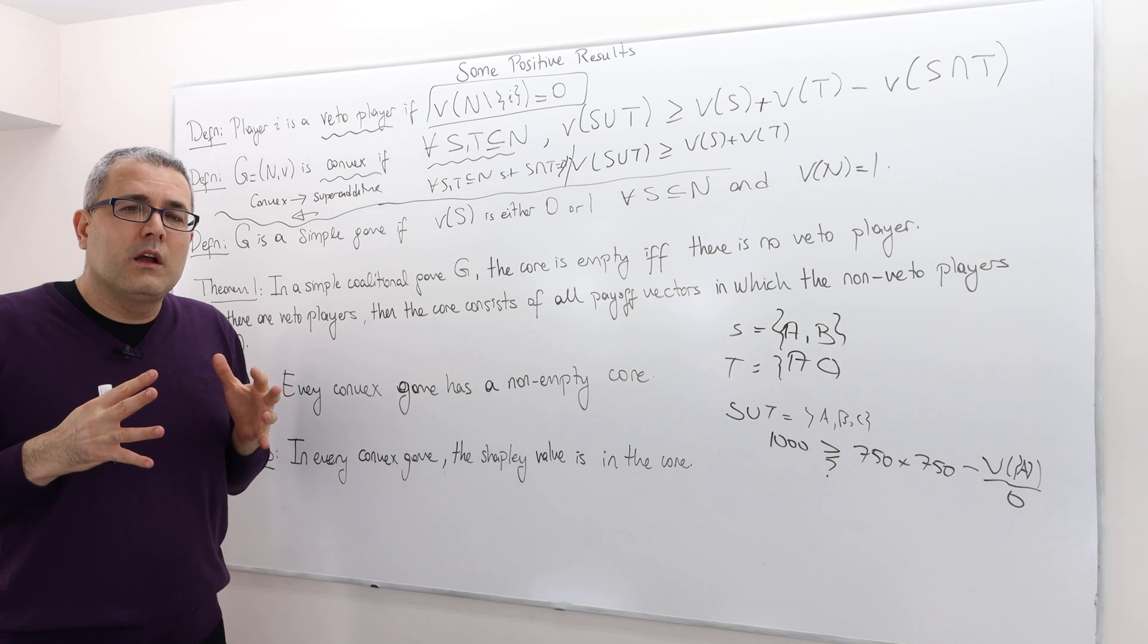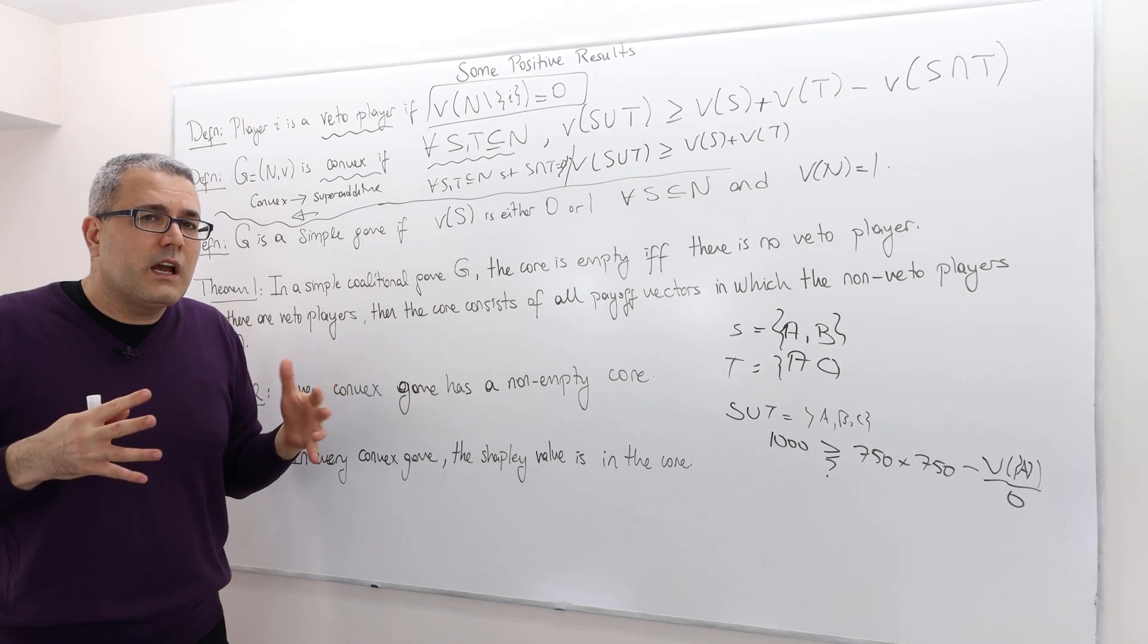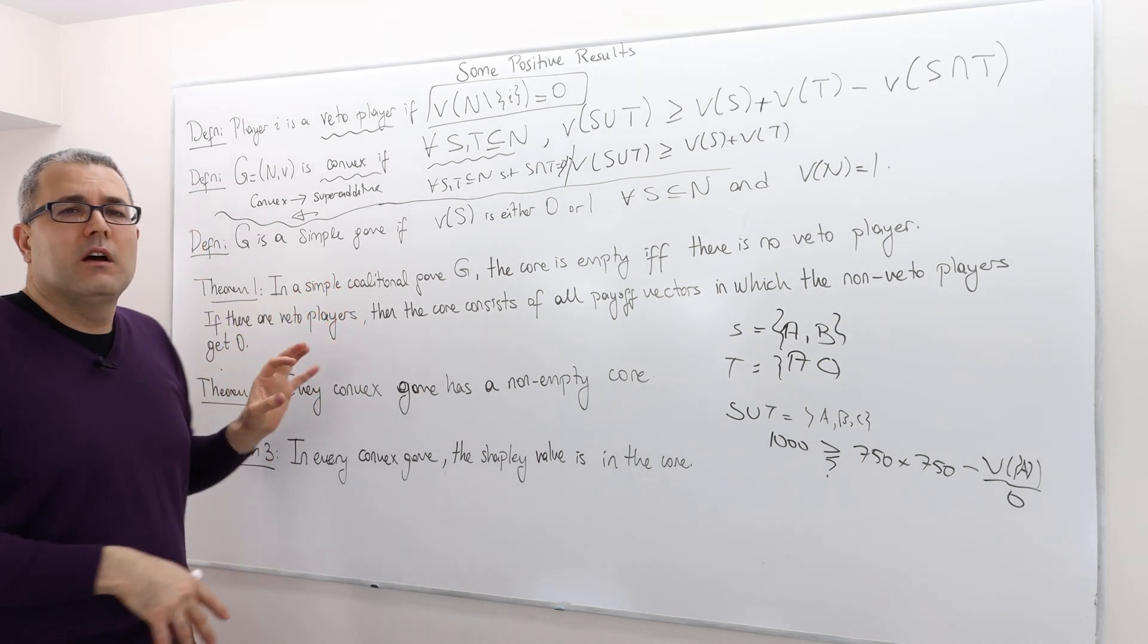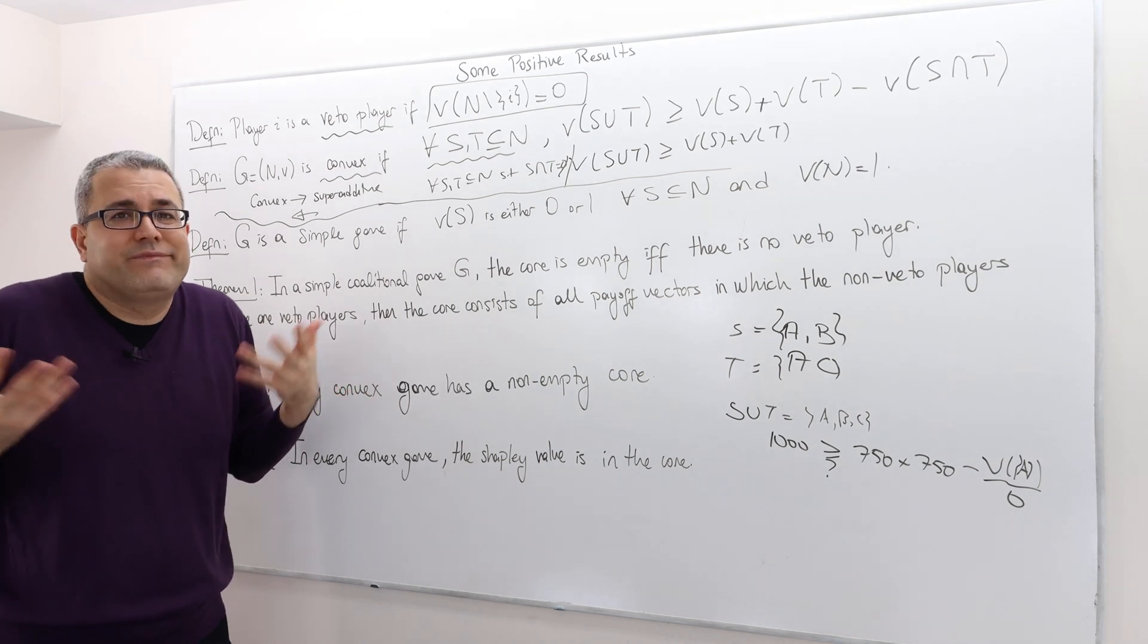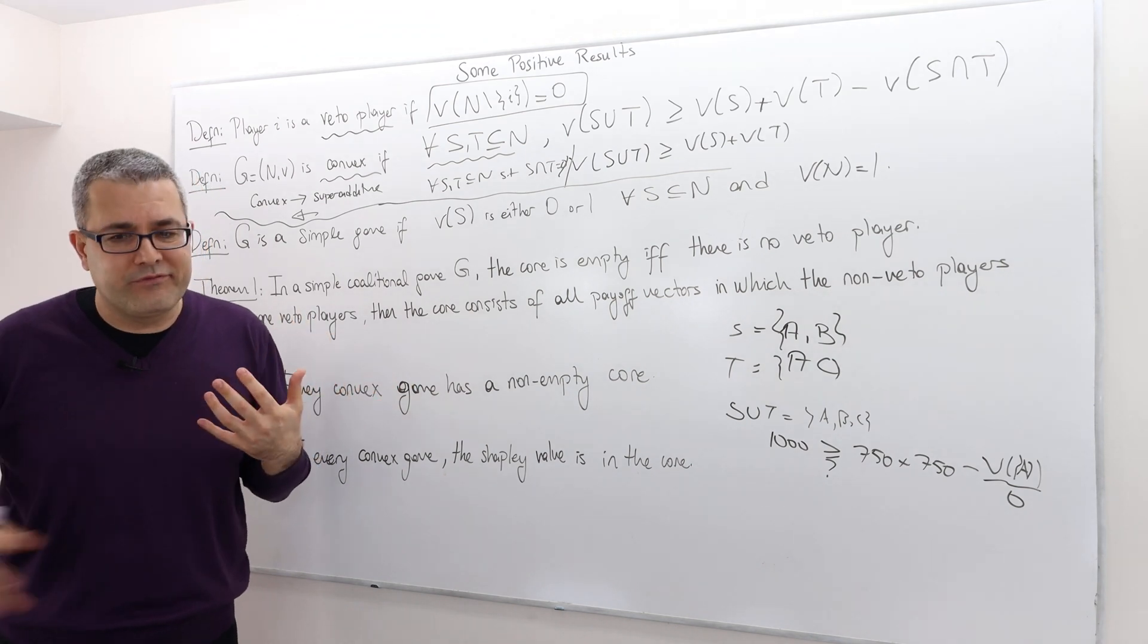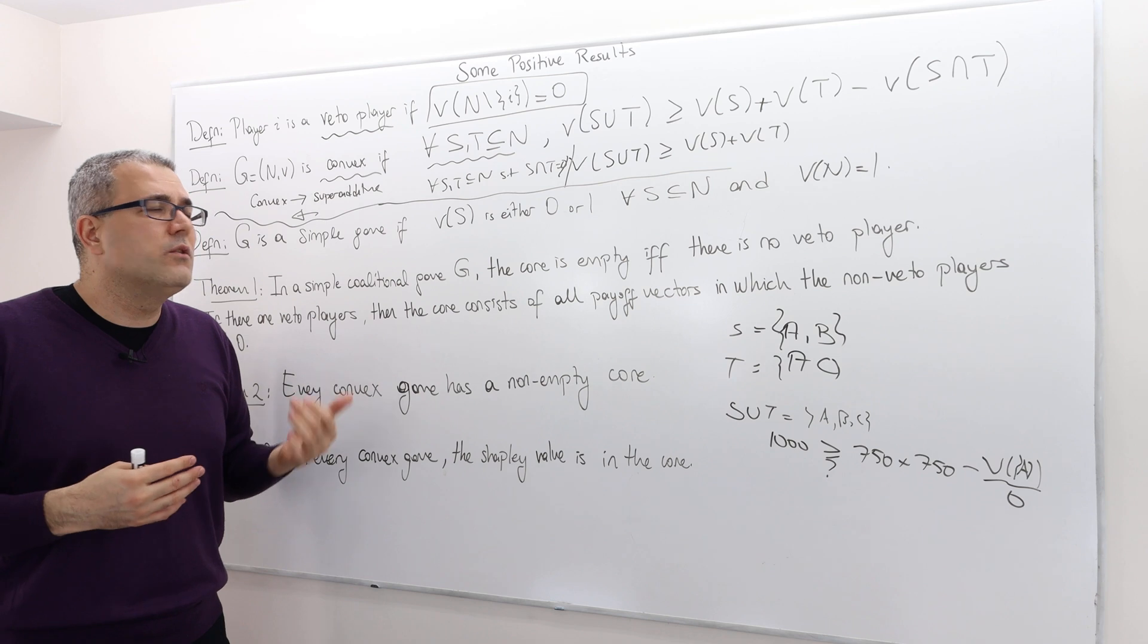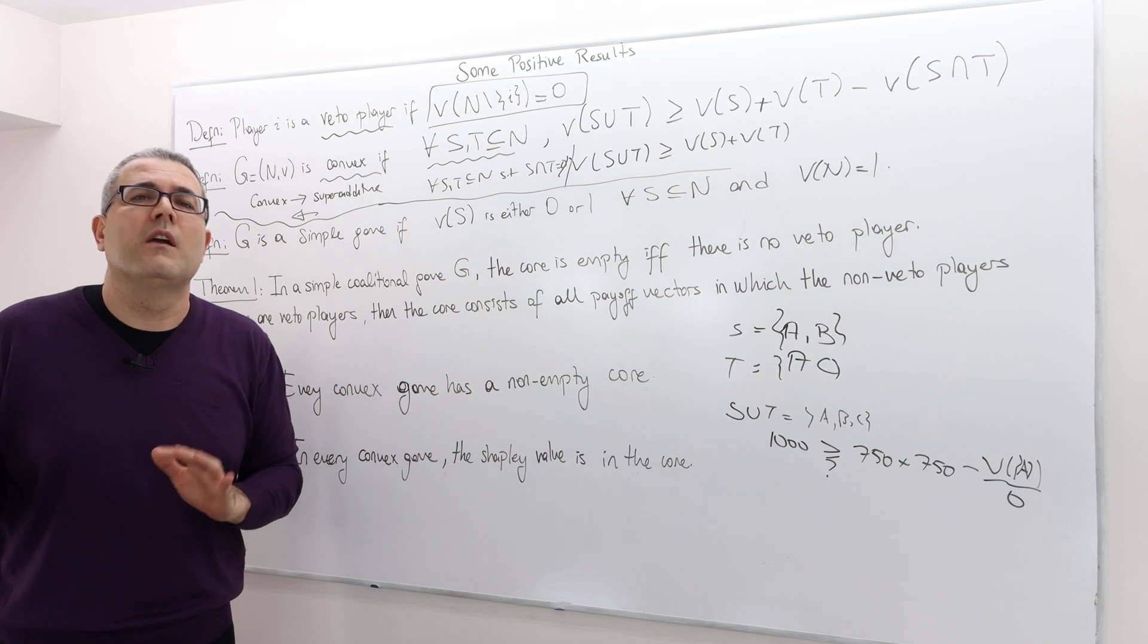But what do they look like? Well, all the payoff vectors in which non-veto players receive 0 are in the core. So because the non-veto players are, they're not important. The veto players are the key players. You can basically ignore the rest. So if you're looking for core allocation in such games with the existence of veto players, you can simply say, you know what, the veto players, non-veto players, I'm sorry, should get 0.